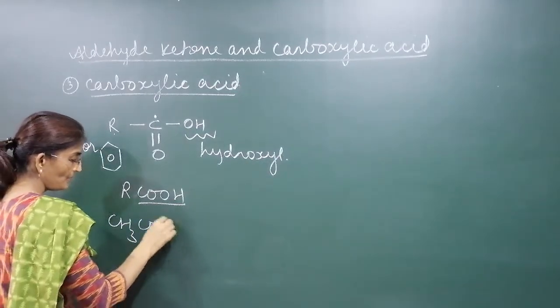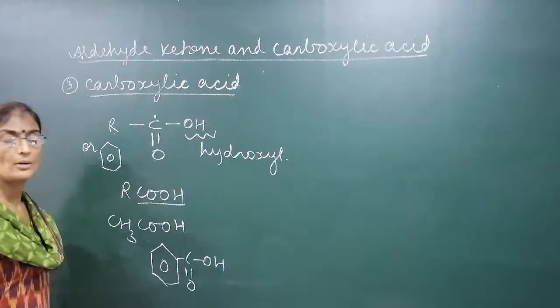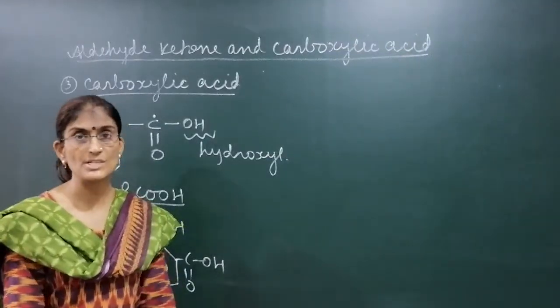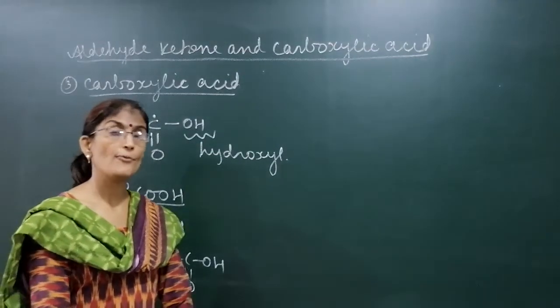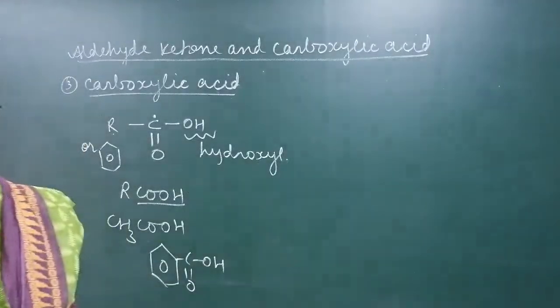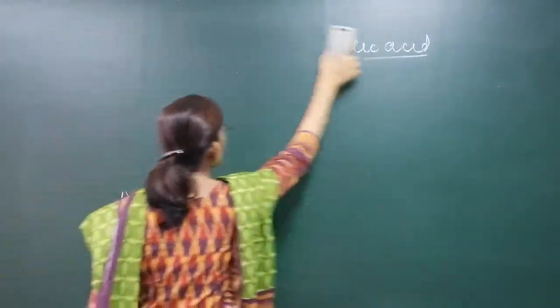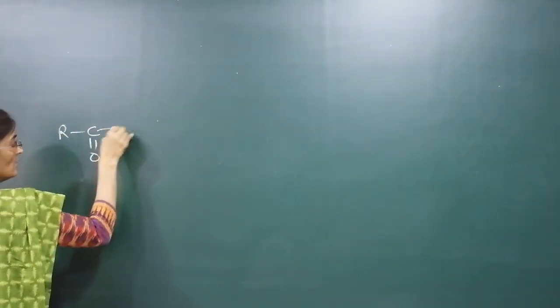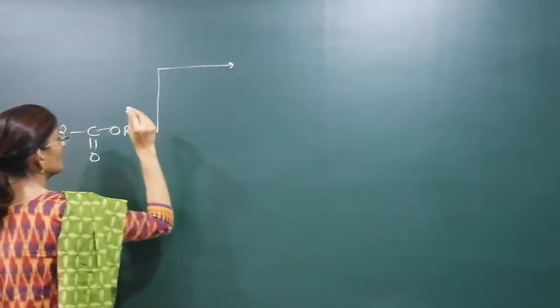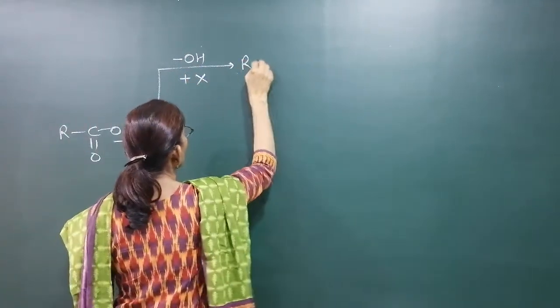Examples of carboxylic acids include acetic acid and benzoic acid, which has a C=O and OH group. So total, three carbonyl compounds are aldehydes, ketones, and carboxylic acids. There are also four derivatives of carboxylic acids which are also known as carbonyl compounds. The first derivative: if the –OH group is replaced by a halogen, we have an acid halide.